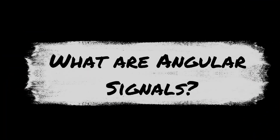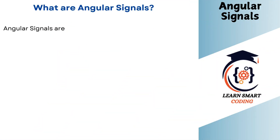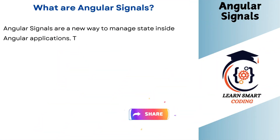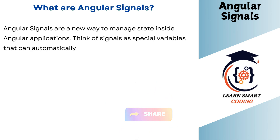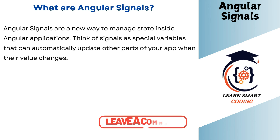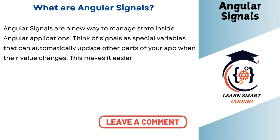What are Angular Signals? Angular Signals are a new way to manage state inside an Angular application. Think of Signals as special variables that can automatically update other parts of your app when their value changes. This makes it easier to keep your app's UI in sync with the data.